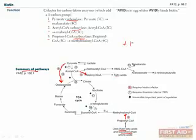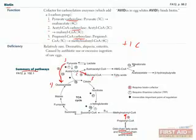Also know that reactions involving biotin will add one carbon to the substrate, such as going from three to four carbons, or from two to three carbons. Deficiency in biotin is pretty rare, but it can be caused by some antibiotics and raw egg ingestion, because egg whites contain the protein avidin, which avidly binds to biotin, preventing its absorption. Signs and symptoms of biotin deficiency include dermatitis, alopecia, and enteritis.